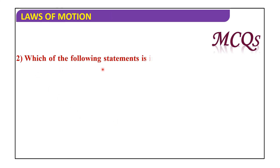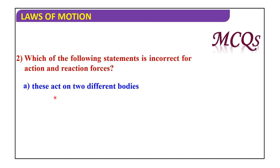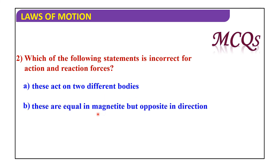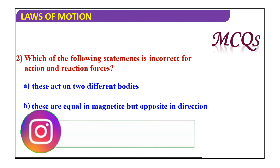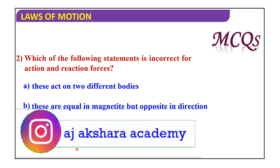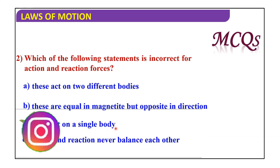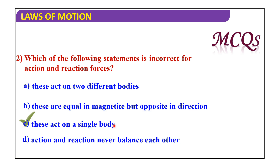Which of the following statements is incorrect for action and reaction forces? These act on two different bodies. These are equal in magnitude but opposite in direction. These act on a single body. Action and reaction never balance each other. The incorrect statement is: these act on a single body.